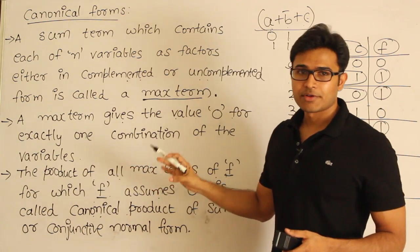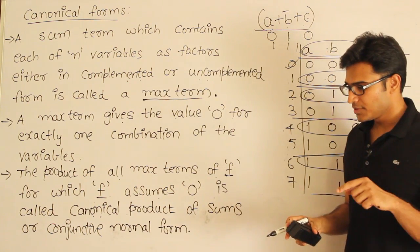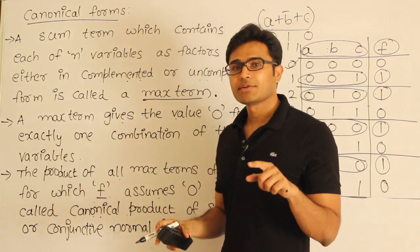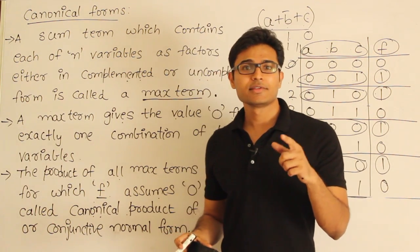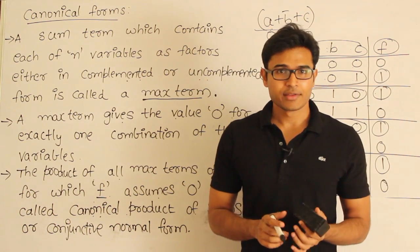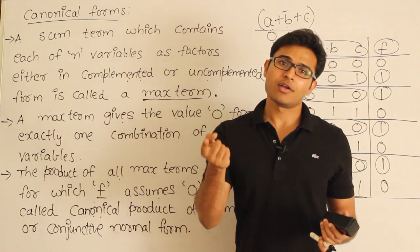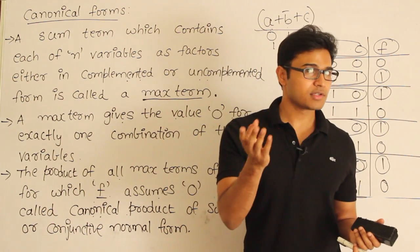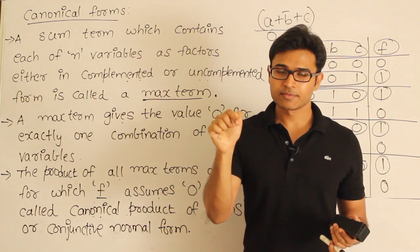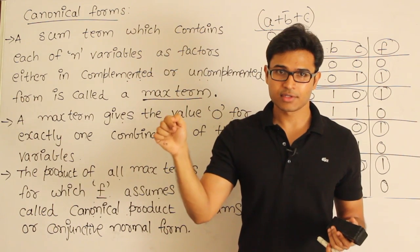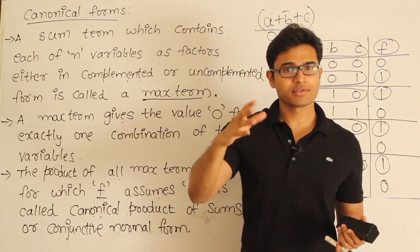So that is the specialty of the max term. Now we are going to define the function in terms of max terms. Min terms means saying when a function is going to be 1. Max terms means saying when a function is going to be 0. Either you say when a function is going to be 1 — that defines the function — or you say when a function is going to be 0 — that is also a definition of the function. You know where to put zeros, or where to put ones. Either you define zeros or you define ones, and automatically the remaining will be ones or zeros.